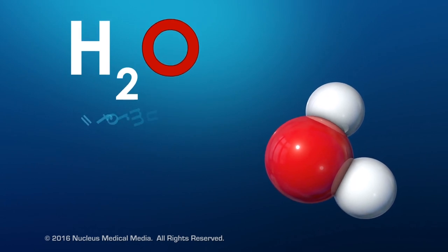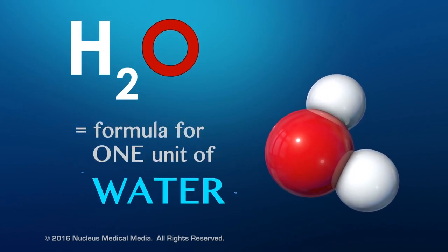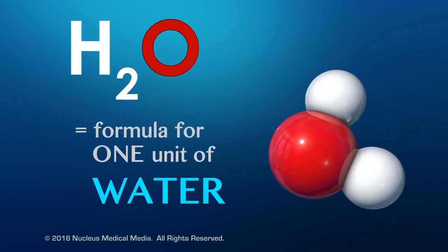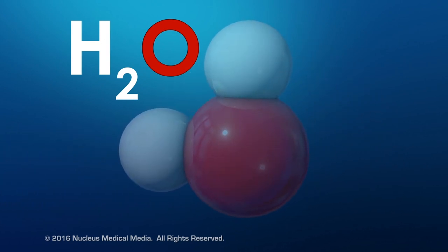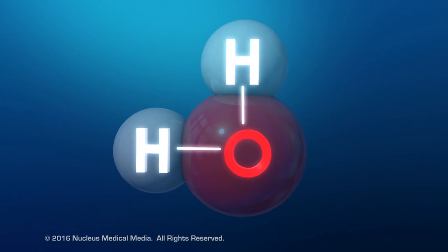So H2O is the formula for one unit of water. The formula shows that a unit of water contains a fixed proportion of two atoms of hydrogen to one atom of oxygen.